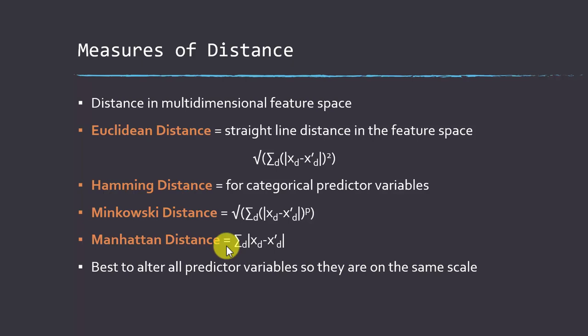Since all of this is based on distance, it's important that all predictor variables be on the same scale. If one variable ranges 0–100, another 1–2,000, and another 5–7,000 parts per million, the different scales would create an inherent weight bias toward some variables. In those situations, you'd want to rescale the data so all variables are treated equally in the feature space. Most of the time this is done automatically by the algorithm, but you should always check.